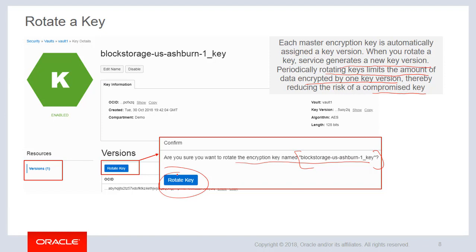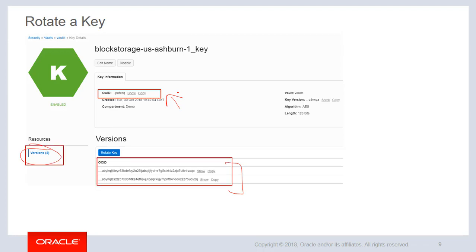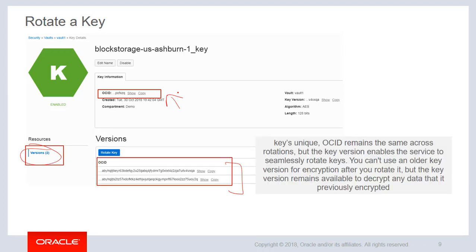You can see the two different versions of the key but both of them have the same Oracle Cloud identifier — the unique identifier which identifies the resource. The key's unique OCID remains the same across rotations. But the key version enables the service to seamlessly rotate keys. You cannot use an older key version for encryption after you rotate it. But the key version remains available to decrypt any data that it previously encrypted.